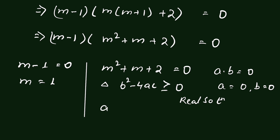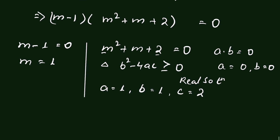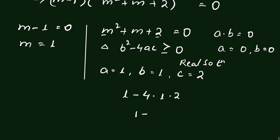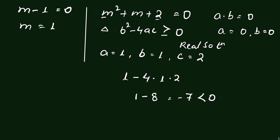Here a is the coefficient of m squared, that is 1; b is the coefficient of m, that is 1; and c is 2. So b squared minus 4ac will be 1 squared minus 4 times 1 times 2, which is 1 minus 8, equal to minus 7 — which is less than 0. Therefore we have no real solution from this quadratic, and we have to find only real solutions.